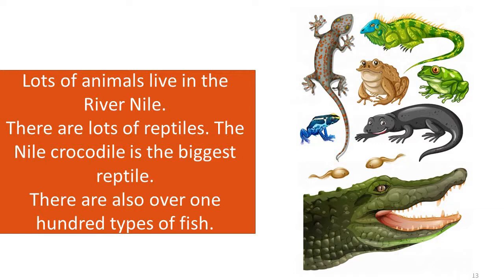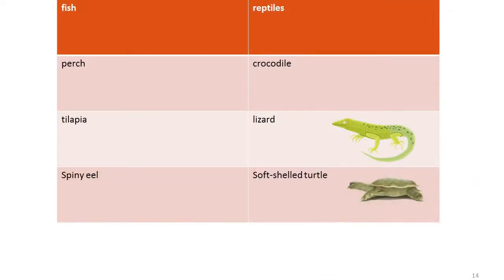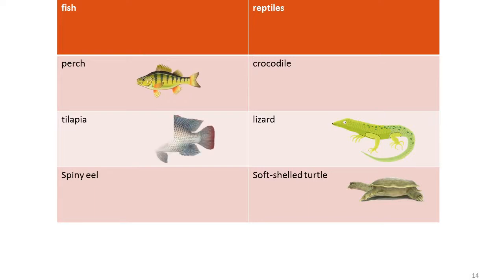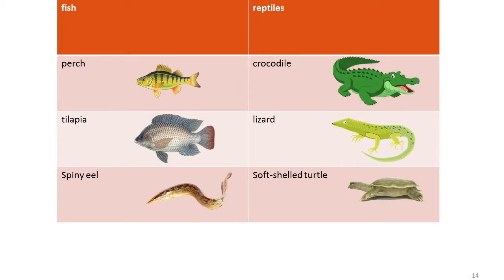Lots of animals live in the River Nile. There are lots of reptiles. The Nile crocodile is the biggest reptile. There are also over 100 types of fish. We have two kinds: fish and reptiles. Fish like perch, tilapia, and spiny eel. Reptiles like crocodile, lizard, and soft-shelled turtle.